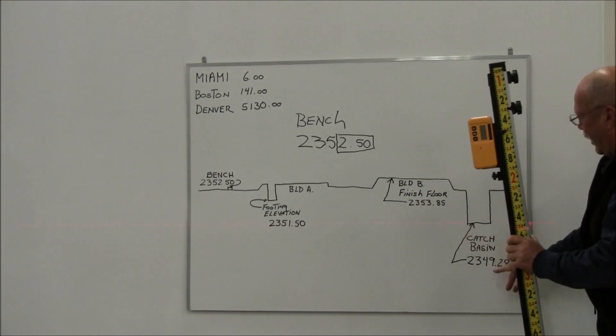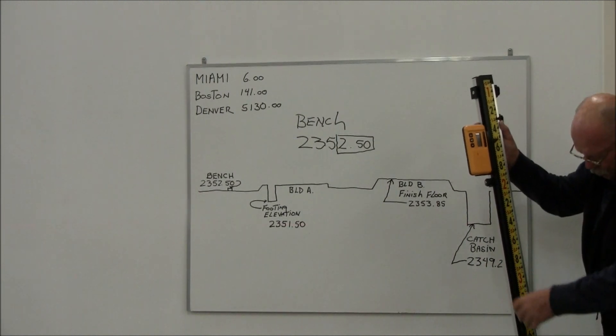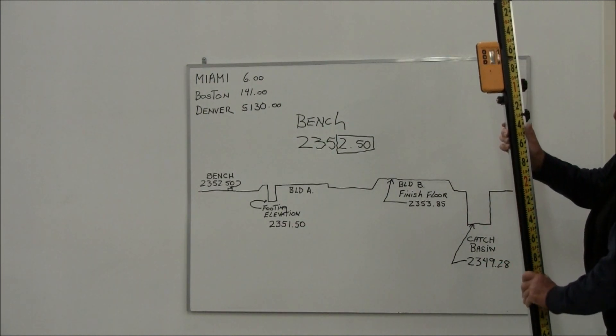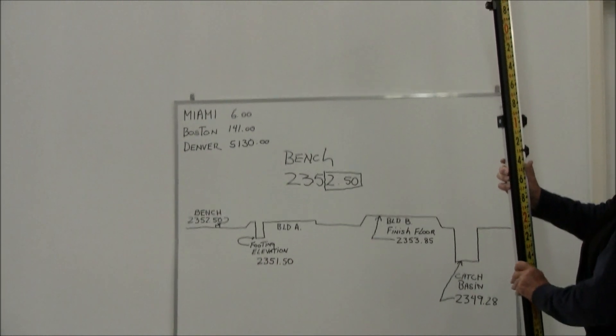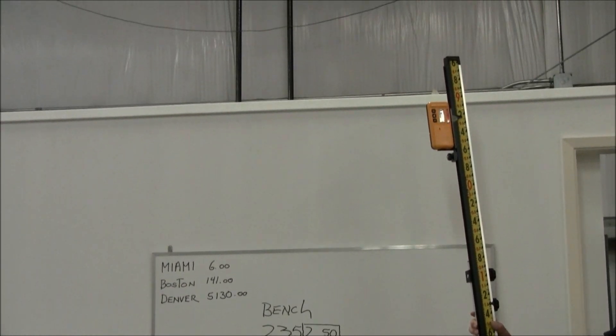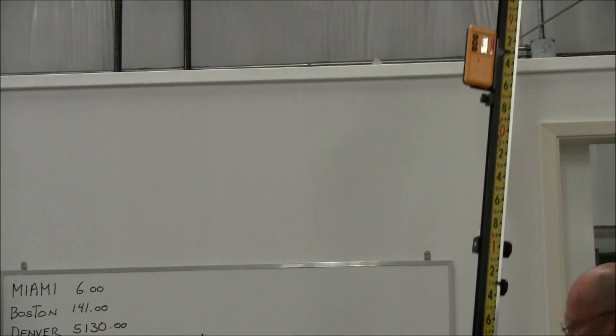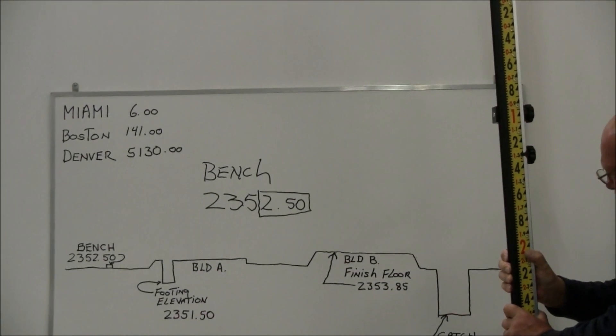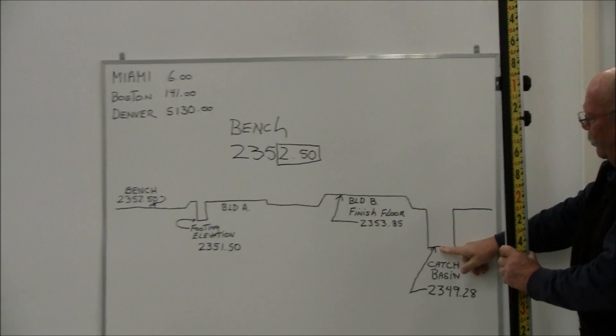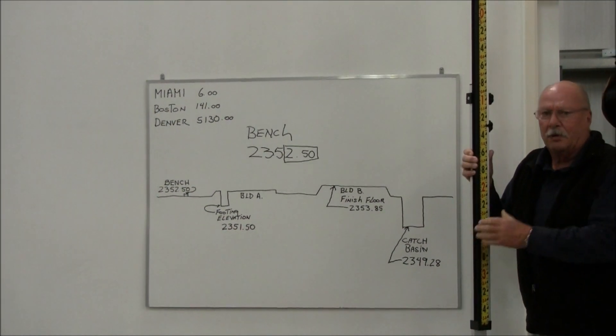Same thing with a catch basin, 2349.28. What I would do is run the rod to 928—there's 925, 28 right there. So as I dig down, when I pick up the steady tone and the bottom of my rod is at that point, I'm at that elevation.